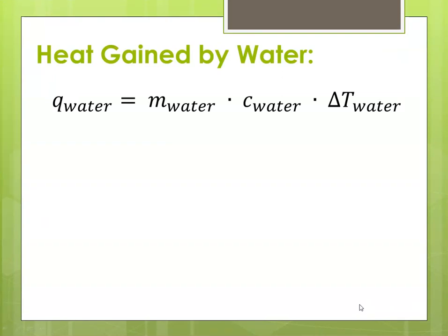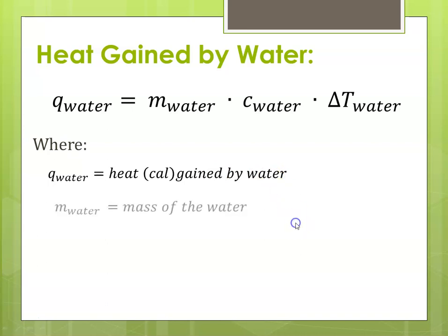So now, the first thing we'll do is talk about the heat that was gained by the water, and we'd use the equation Q equals M times C times delta T, where, in this case, the Q for the water that we're calculating is the heat in calories that was gained by the water. The M for the water is the mass of the water, the C for the water is its specific heat, and we know that water has a specific heat of 1 calorie per gram degree C, and the delta T for the water is the T2 minus T1, or T final minus T initial.